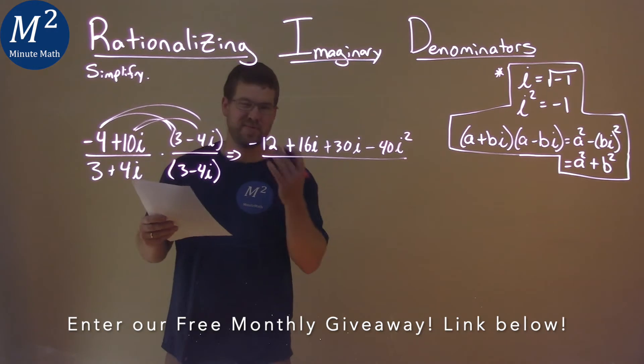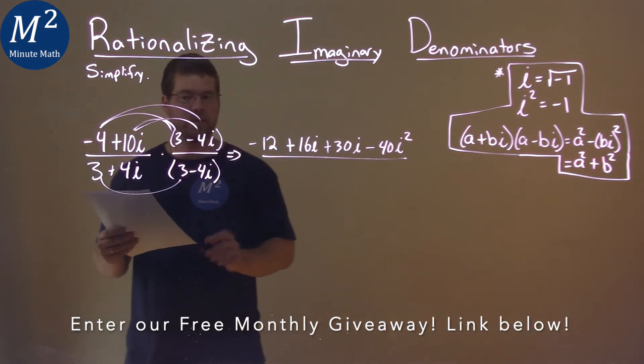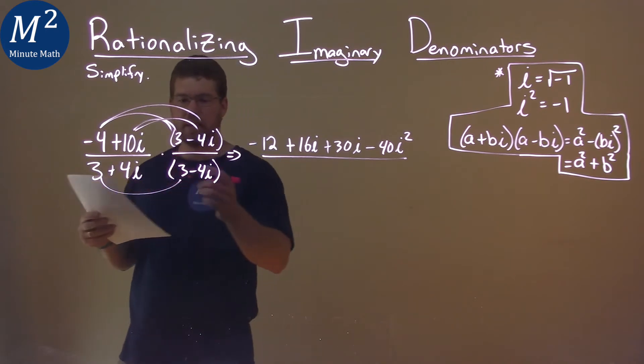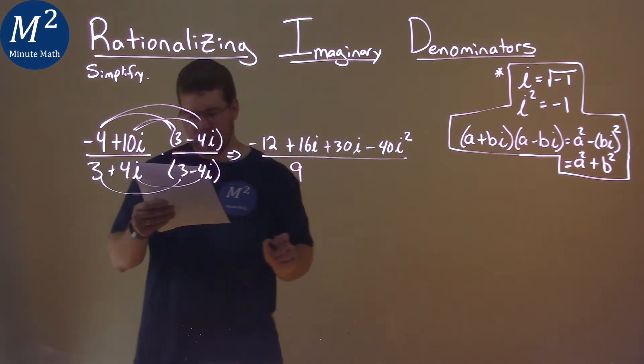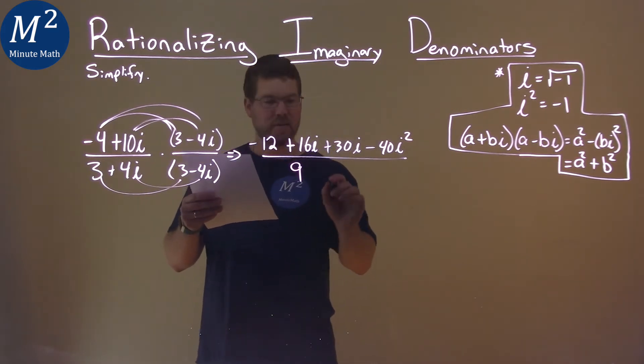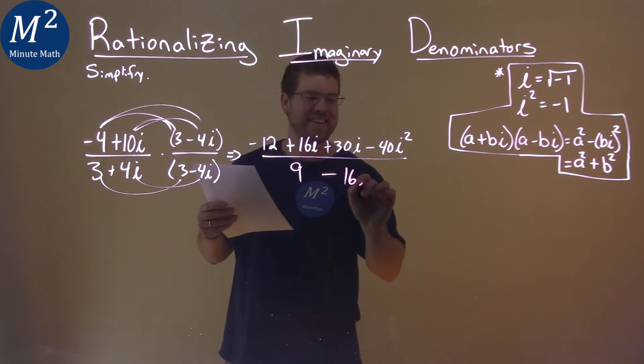Now we'll do the denominator. The whole point of the conjugate, you just have to multiply the first and then the last part. 3 times 3 is 9, and 4i times minus 4i is minus 16i squared.